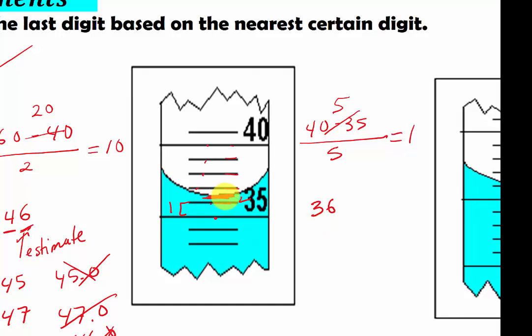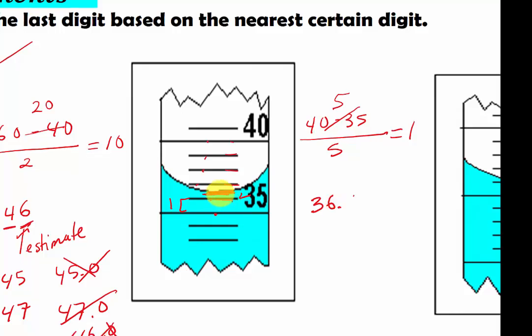But the meniscus passed 36 a little bit, so we know we have to estimate. In this case, we have the meniscus is half of the increment. Half way of this increment. So we assume, what's half of 1? It's going to be 0.5. So therefore, our answer is 36.5. This is where we estimate it.